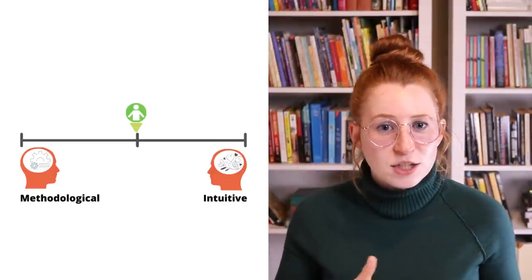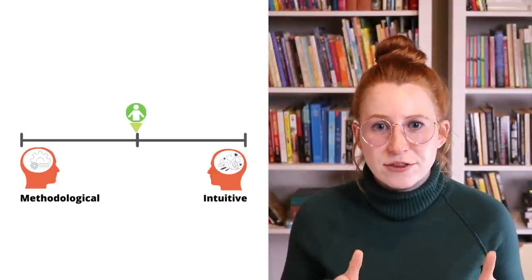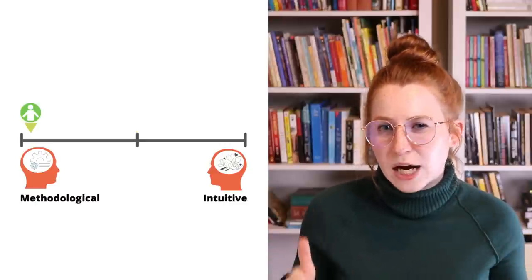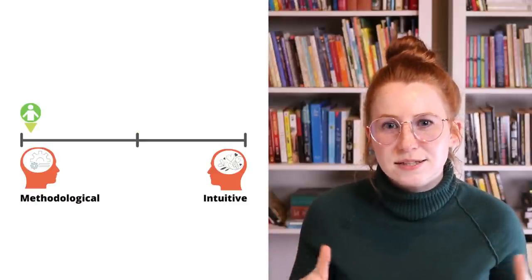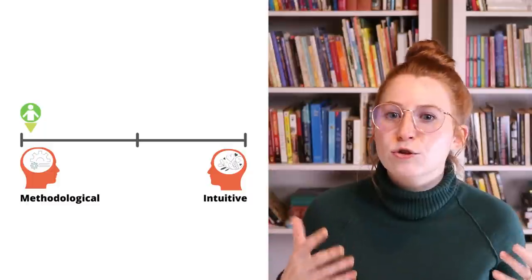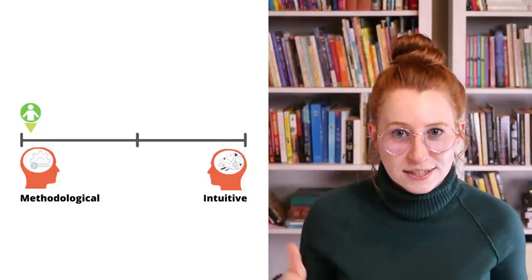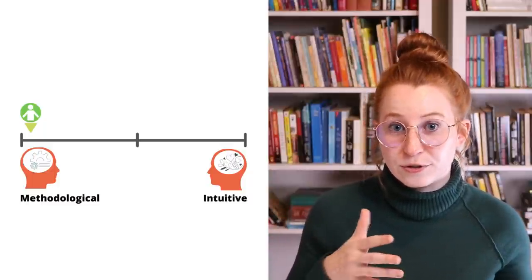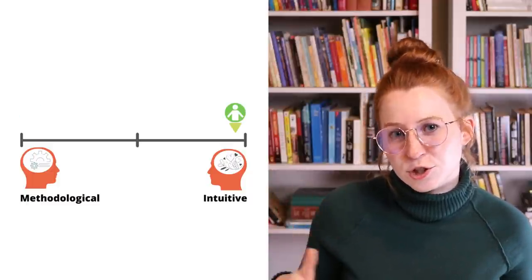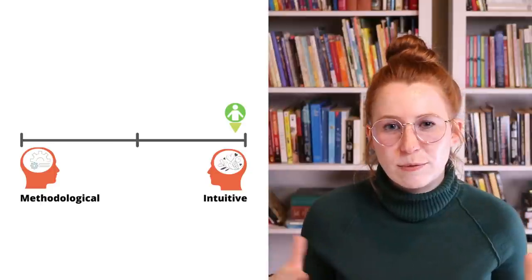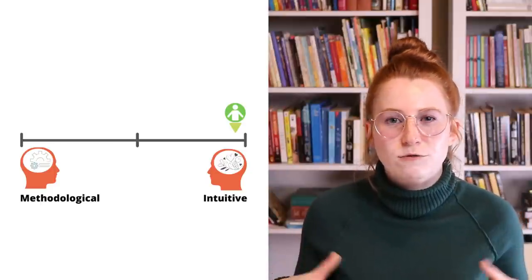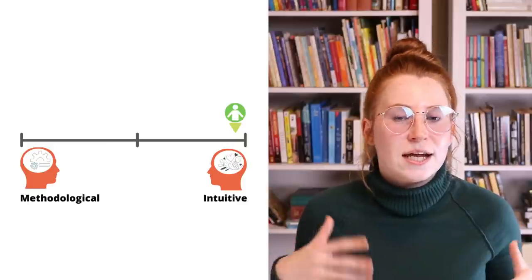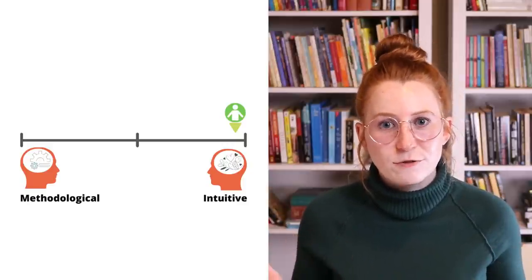A pantser is someone who flies by the seat of their pants, or sort of wings the first draft or maybe the entire process of writing the novel. The other continuum is methodological to intuitive — methodological meaning you use processes and systems, for example story structure and scene structure, to create your novel, versus intuitive, which is more about using your gut feeling or following your heart or just using your intuition in order to create your novel.